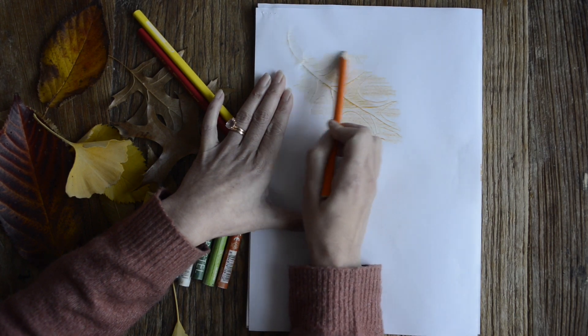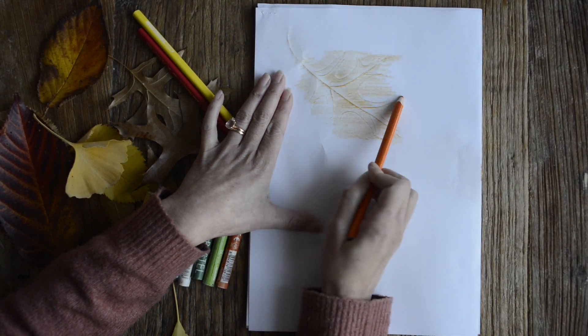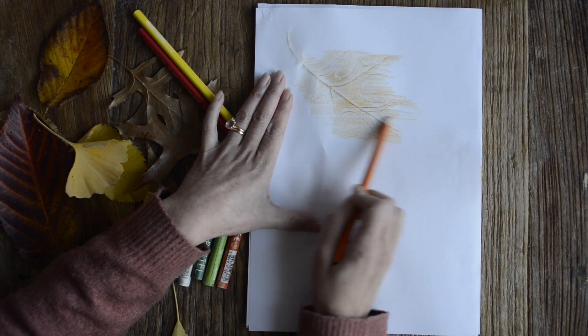This is a big leaf. So you should be able to see the lines of your leaf coming through once you color over it.